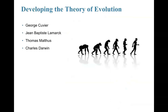We have a historical timeline that contributes to developing the theory of evolution. I'm going to talk about four scientists: George Cuvier, Jean-Baptiste Lamarck, Thomas Malthus, and Charles Darwin. There are certainly others that contribute to this theory of evolution, but these are the four I'm going to focus on.